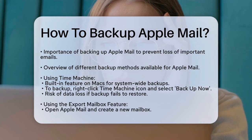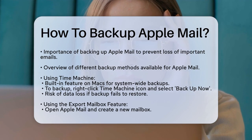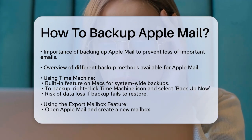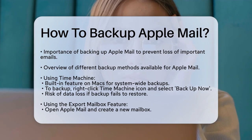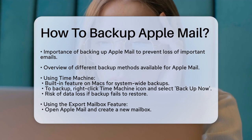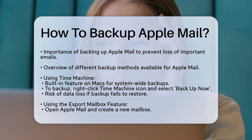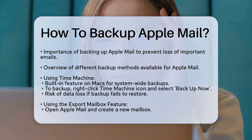Using Time Machine. One of the easiest ways to back up your Apple Mail is by using Time Machine. This is a built-in feature on Macs that can automatically back up your entire system, including your emails. To use Time Machine, you need to have it installed and enabled on your Mac. Simply right-click the Time Machine icon in the dock and select Backup Now from the pop-up menu. However, keep in mind that if the Time Machine backup fails to restore, you might risk losing your data.